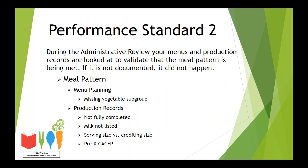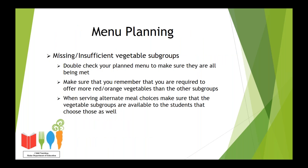Performance Standard 2 is the next area we are going to look at. This can include meal components and quantities and production records. We are going to touch on both of these topics when talking about common findings. Specifically, we are going to look at menu planning and production records. Menu planning is the foundation of ensuring that you are meeting the meal pattern. It is important that while you are planning your menus, you double check to make sure that every component and subgroup are being met. Having someone proofread your menus is a great way to accomplish this. It is important to remember that the red-orange vegetable subgroup needs to have a higher offering than the other groups. One of the most common problems we find is that a vegetable subgroup will be missed or will not be available for an alternate meal choice. This can result in fiscal action during the administrative review process.